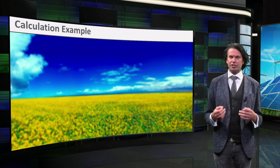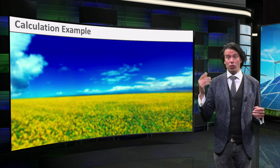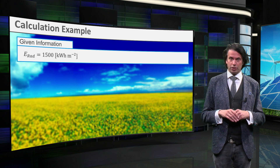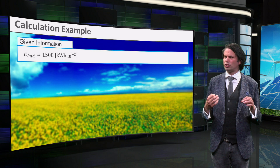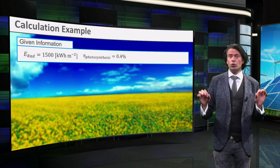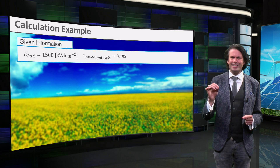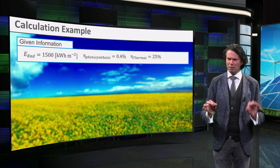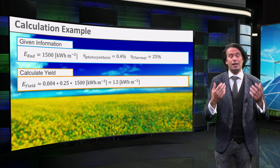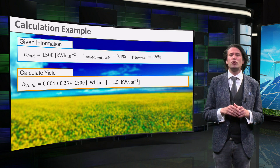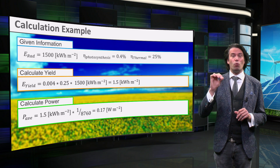Now let's make an estimation of potential for electricity from wood per square meter. Biomass takes its energy from solar irradiation. Yearly irradiation in North America is around 1500 kWh per square meter per year. Plants have an average photosynthetic efficiency between 0.1% and 2%. Let's assume that wood has a photosynthetic efficiency of 0.4%. The wood is burned and the heat is used in a conventional steam turbine for electricity generation. The thermal conversion efficiency is about 25%. This means the energy yield is 0.004 × 0.25 × 1500, which equals 1.5 kWh per square meter per year. The average power production is therefore 0.70 W per square meter.